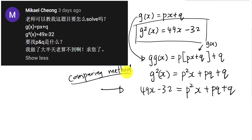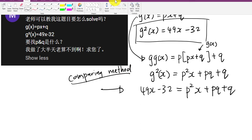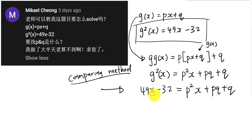And then from here you have p²x plus pq plus q. Now what I want to do is I want to do a comparing method. When I say the comparing method, it means I will compare the side with the x and I will compare the side without x.